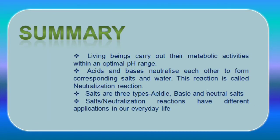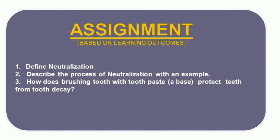In summary, every living being carries out metabolic activities within an optimal pH range — for example, our body has a pH of 7 to 7.8. Acids and bases react with each other to form corresponding salts and water in a neutralization reaction. The salts formed are of three types: acidic, basic, and neutral. These neutralization reactions have different applications in our daily life.